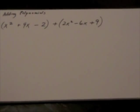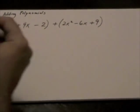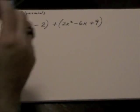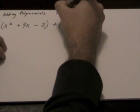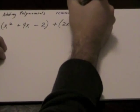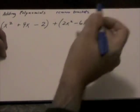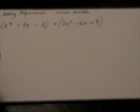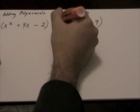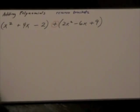Adding polynomials. The key point here, what we want to do is we want to try to remove brackets. Because separating the two sets of brackets is an addition sign, we can just outright remove the brackets.